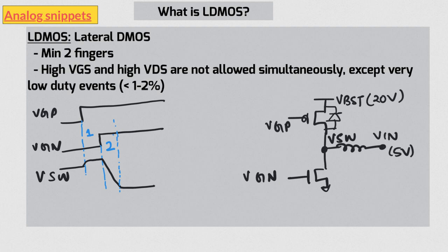If switching frequency is 2 MHz, then 5 nanoseconds spent here is only 1% of the duty cycle. And this type of low-duty events are acceptable for LDMOS.